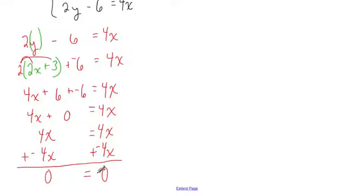All of our variables are gone. We've seen this before when we studied inconsistent systems. When the variables went away and the equation was false, we knew that the system was inconsistent. Now, however, the equation is true. 0 does equal 0.